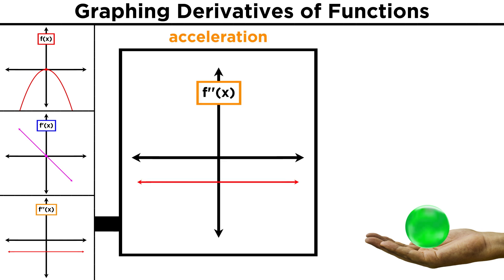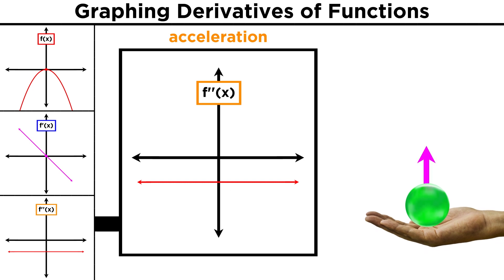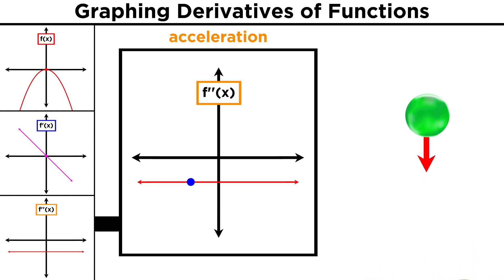Lastly, acceleration is the derivative of velocity, and therefore the second derivative of position. The acceleration experienced by the ball is just the acceleration due to the gravitational pull of the earth, and that is a constant negative value. It is this gravity that takes the initial velocity of the ball and immediately decreases it, constantly, until it finally hits the ground a few seconds later.